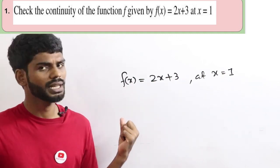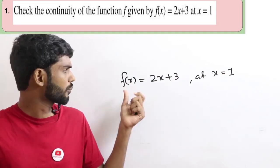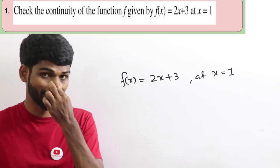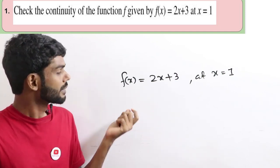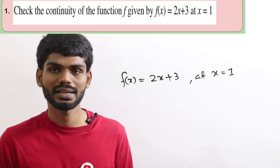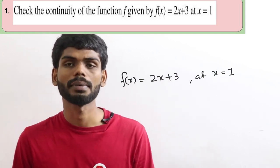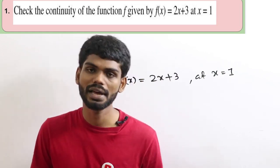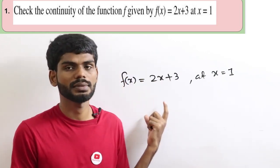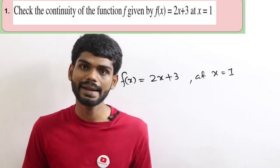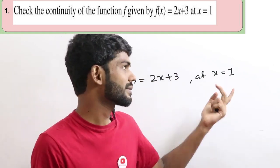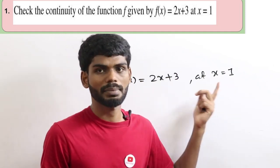A linear function is what we call a polynomial function, of the form ax plus b. So, we have to check the continuity at x equal to 1. Any linear function will be continuous at any real number.